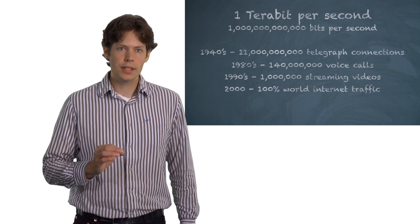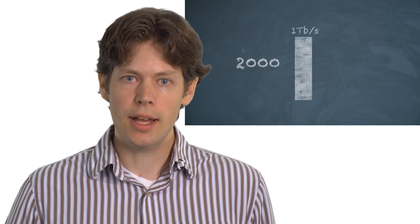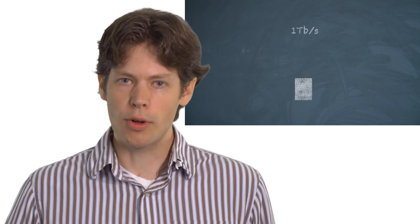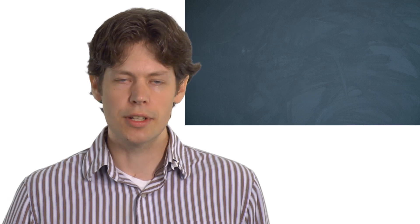Today, one terabit per second represents only two percent of the internet's total traffic volume. So over time, one terabit per second has evolved from a fantastic to only a fractional capacity in the network, and it's shrinking even as we speak.